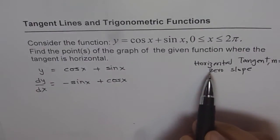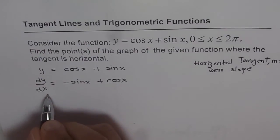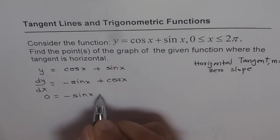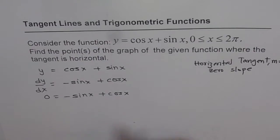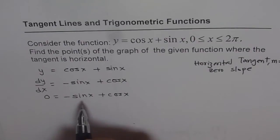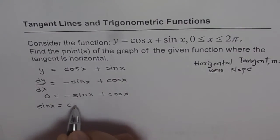Now for horizontal tangent, dy/dx should be equal to 0. Therefore, we could write this as 0 equals minus sin x plus cos x. And we need to solve for x. Let's take sin x on the right side, and we can write sin x equals cos x.